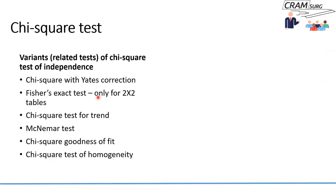A quick summary of related tests: the chi-square with Yates correction and Fisher's exact test are particularly useful when numbers are really small. There is a chi-square test for trend, used when groups are ordered — for example, cancer graded across grade one, two, and three, where you know the ordering. There's McNemar's test, used for before-after comparisons where you shouldn't use the traditional chi-square. And there are two slightly different chi-square tests: the chi-square goodness of fit and the chi-square test of homogeneity, which we'll talk about in a later discussion.